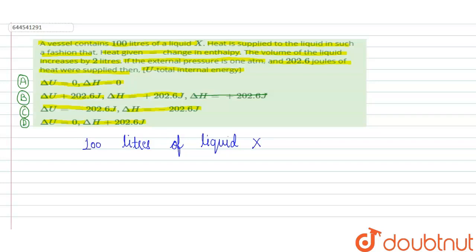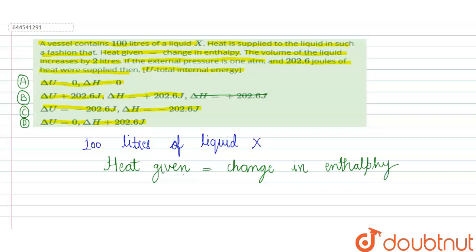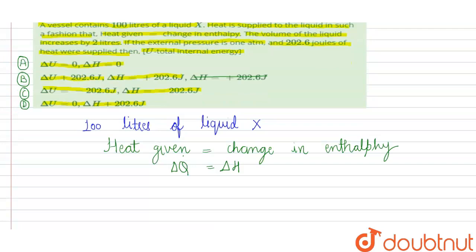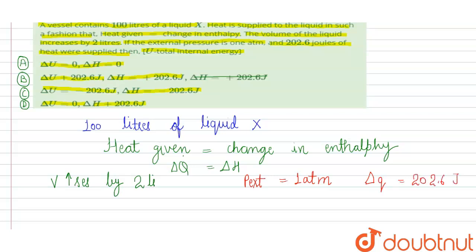Given in the question: heat given is equal to change in enthalpy, that is ΔQ = ΔH. The volume increases by 2 liters, and the external pressure is 180 atm. The heat supplied is Q = 202.6 joules.